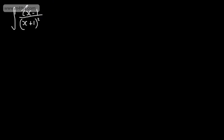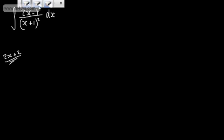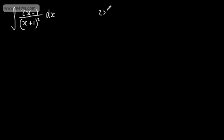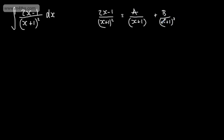Looking at this, we've got 2x minus 1 in the numerator. It might be tempting to think that's the derivative since we'd have an x squared term in the denominator — but expanding gives x squared plus 2x plus 1, and the derivative of the denominator is 2x plus 2, which is not a multiple of 2x minus 1. So we need to split this up using partial fractions. We write (2x minus 1) over (x plus 1) squared as a over (x plus 1) plus b over (x plus 1) squared.